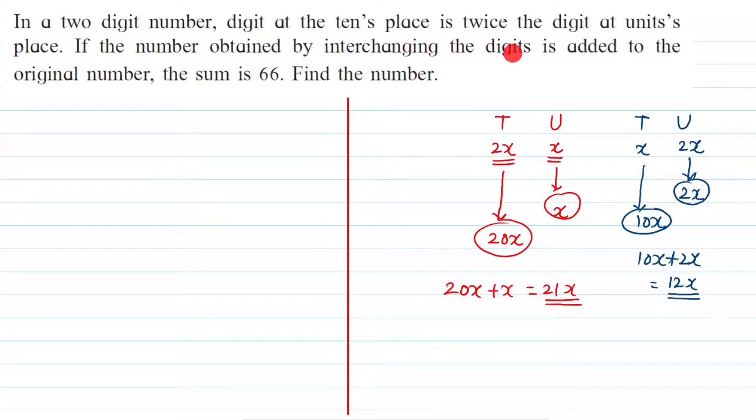If the number obtained by interchanging the digits is added to the original number, the sum is 66.